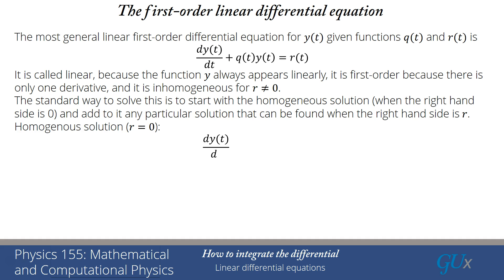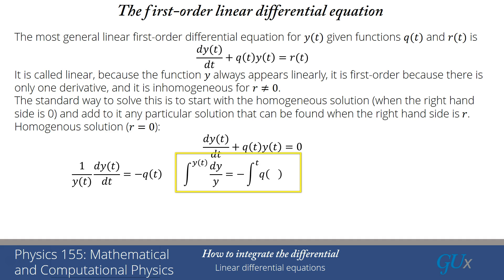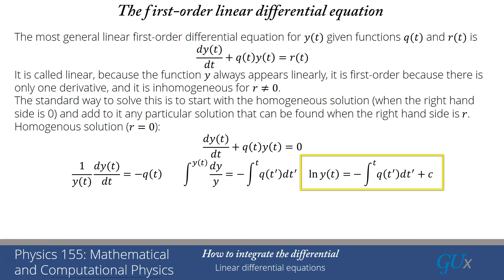Let's start with the homogeneous solution. We have the equation dy/dt plus q(t)y(t) equals zero. I'm going to move the q(t)y(t) term, divide by y(t) and multiply by dt to get into a form where I can integrate it. I'm going to get dy over y equals minus q dt. Now I have to integrate both sides — the integral of dy over y is just log of y. And for the integral of q(t), there's going to be some overall constant on the other side as well.